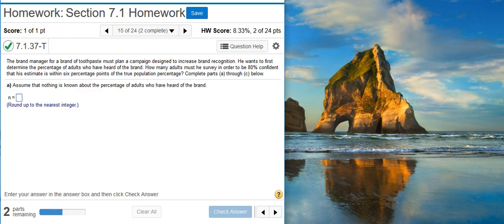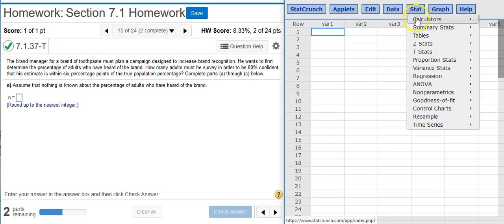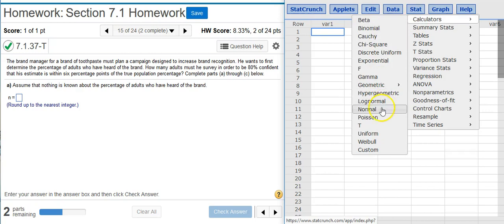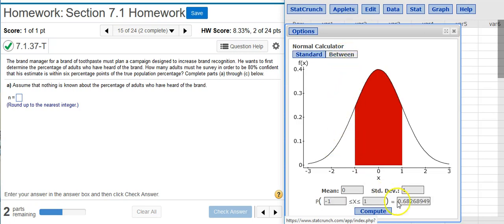To do that, I'm going to open up StatCrunch so I can access the calculator inside. You can also do this with the z-score tables, but I'm just going to use StatCrunch since it's my preference. I'm going to pull up the normal calculator, and we want the standard normal distribution. That's the default here in the normal calculator. So then I want the two-tailed critical value, so I'm going to click the between option and